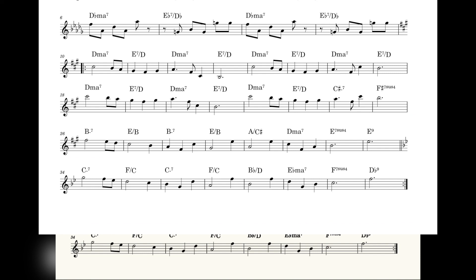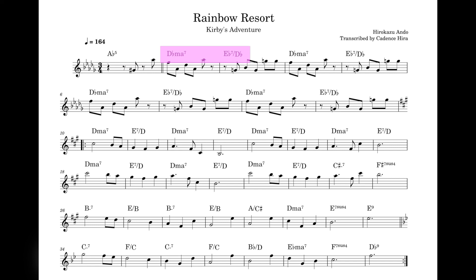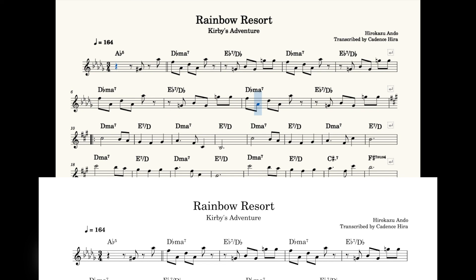The intro to this tune is just a simple D-flat major 7, E-flat 7 over D-flat vamp. This could be analyzed as a 4 and 5 in the key of A-flat, but since it never resolves, and especially because we have a pedal point D-flat in the bass, we instead think we're in the D-flat Lydian mode. This ends up directly modulating to D Lydian, which continues the same chord progression we heard earlier.